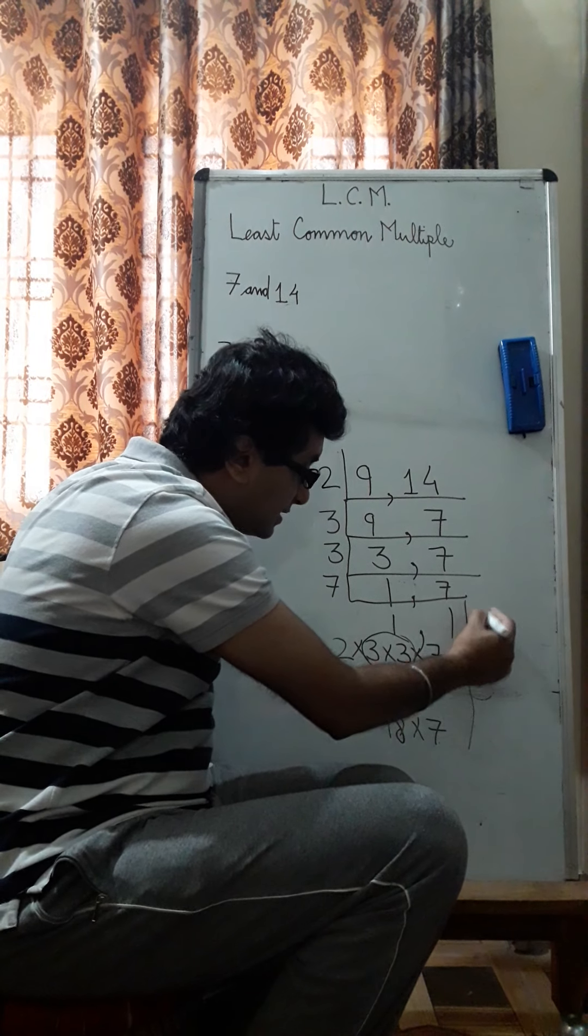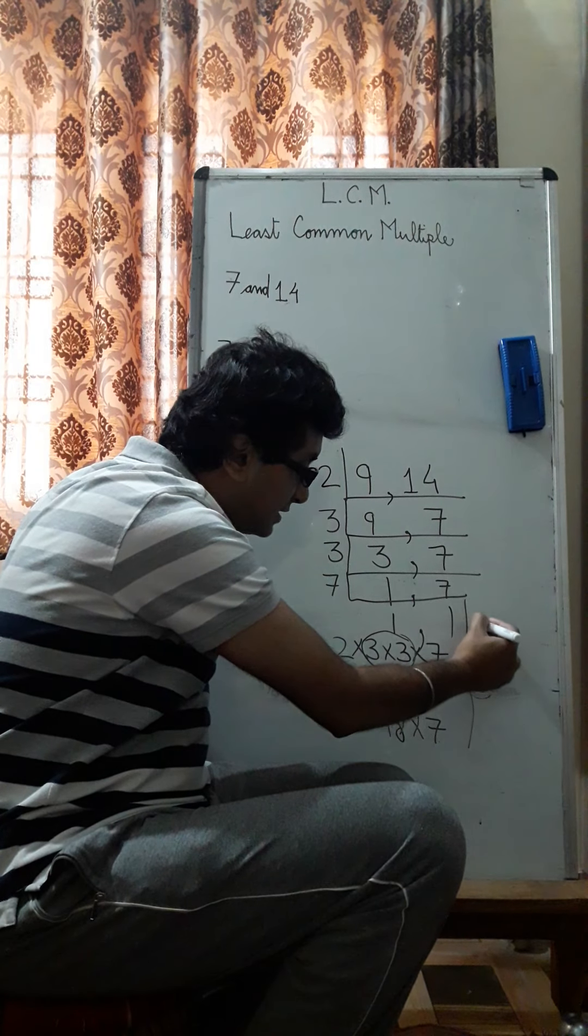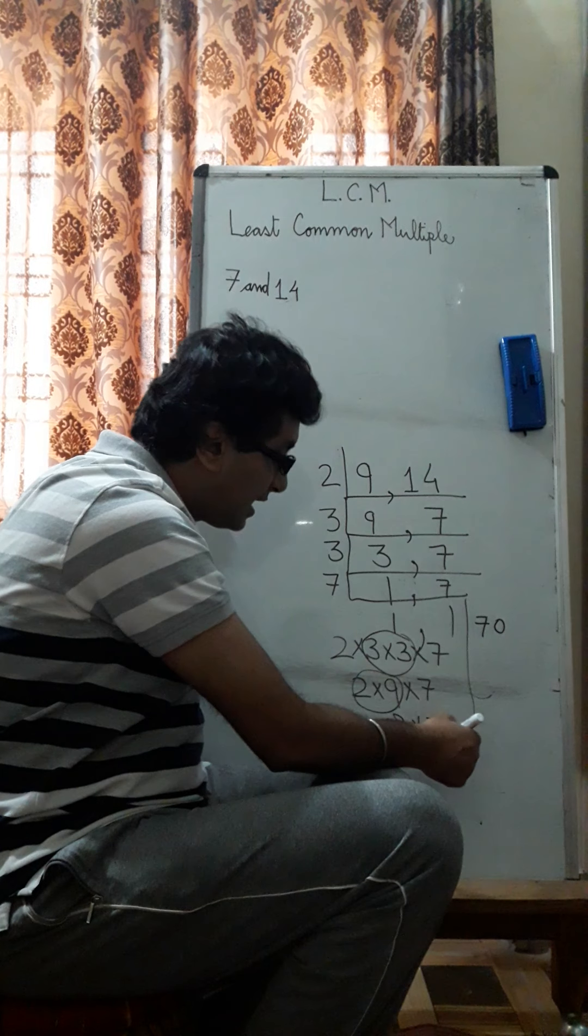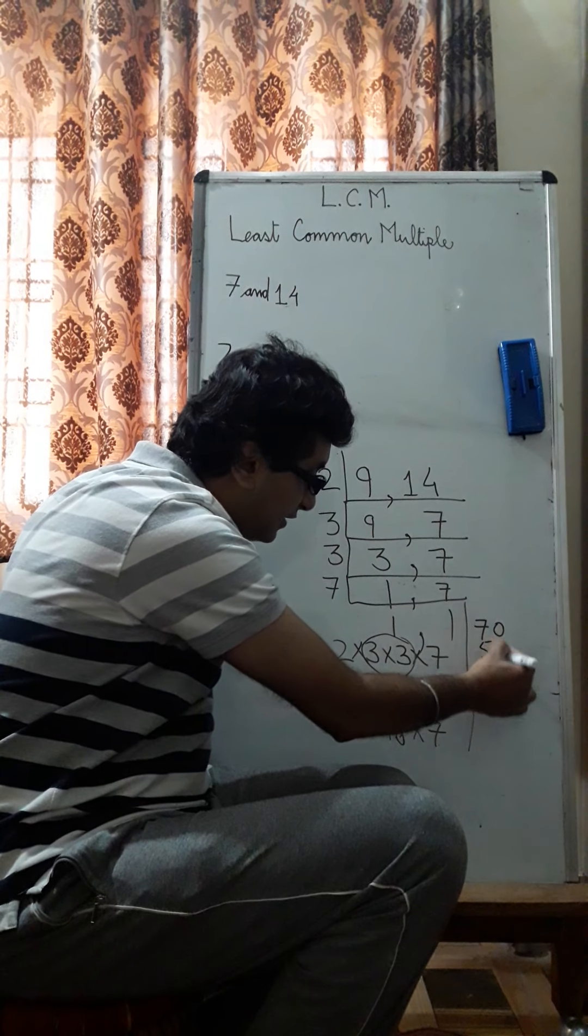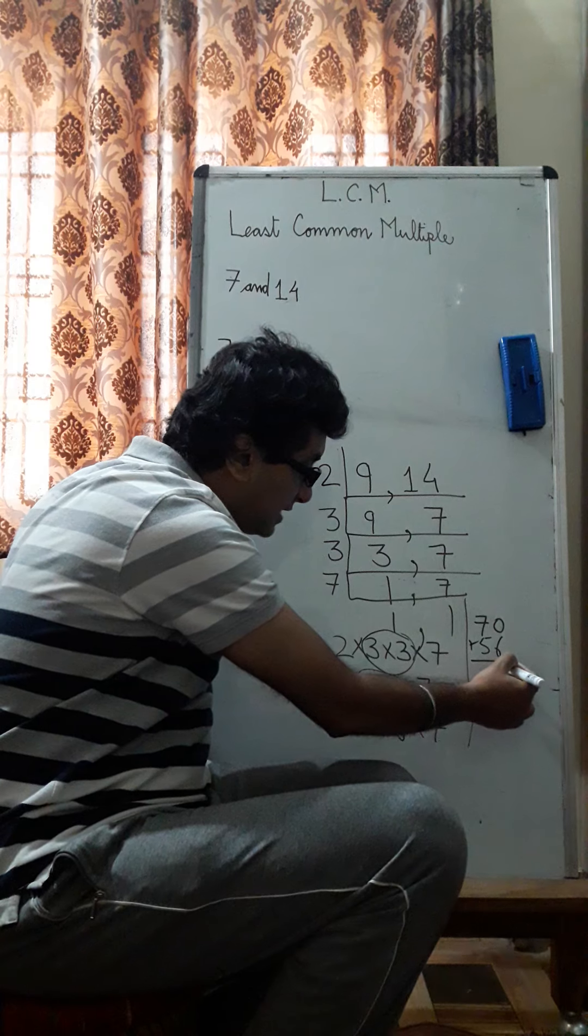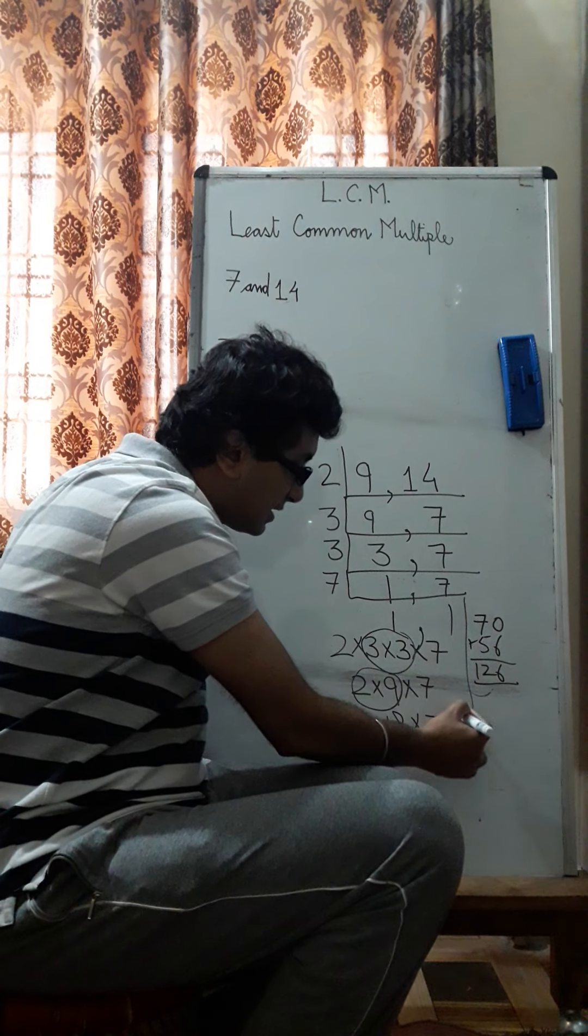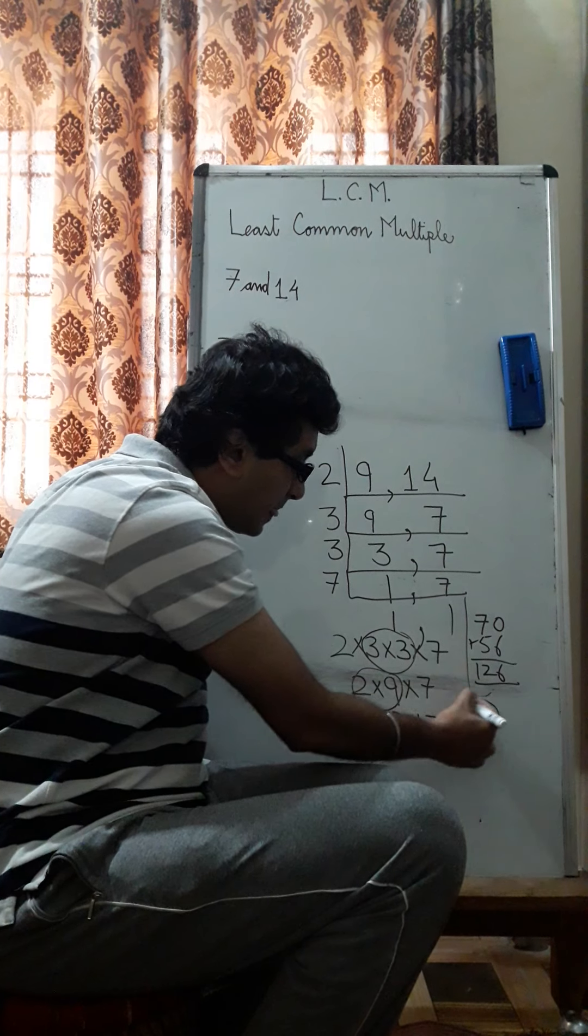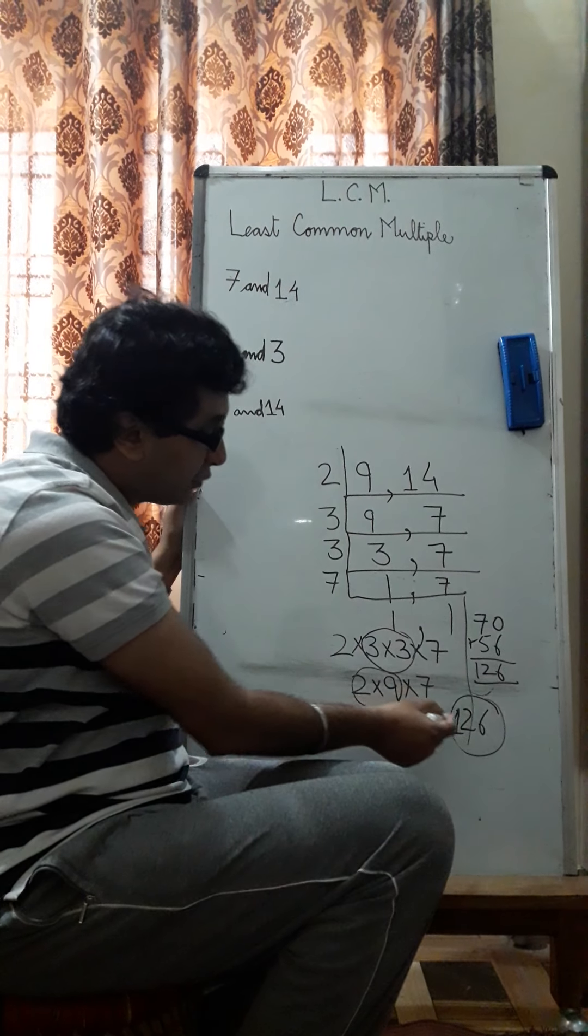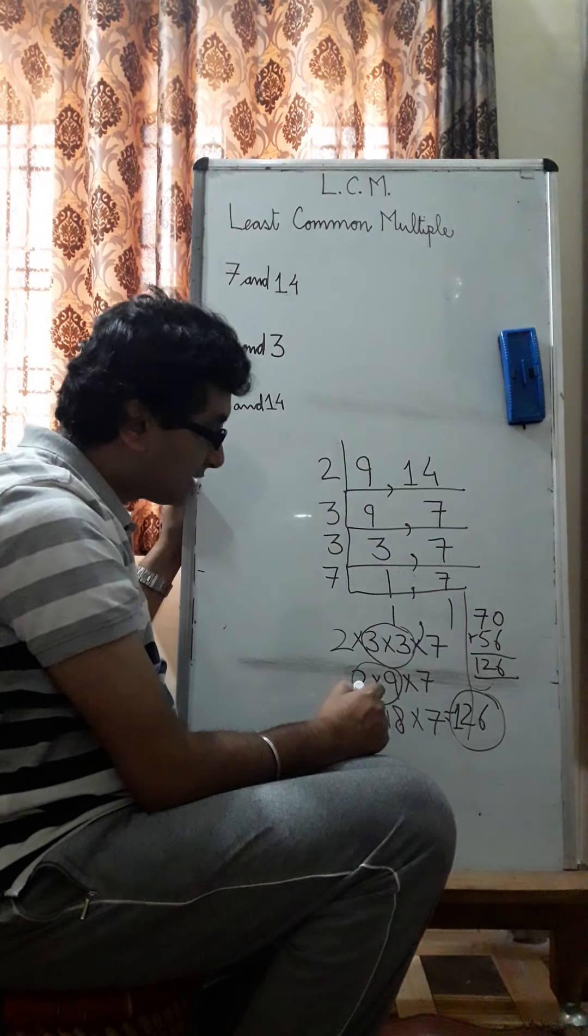Even if you don't remember the table of 18 into 7, what can you do? For 18 into 7, use Vedic math. 7 ones are 7, and 1 is in the 10th place, so 70. And 7 eights are 56. Add both of them. So what is the answer that you get? 126. So the LCM of 9 and 14 is 126.